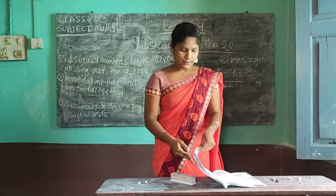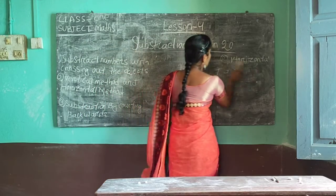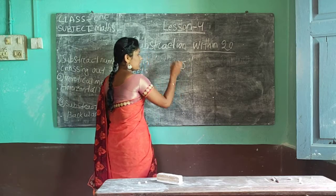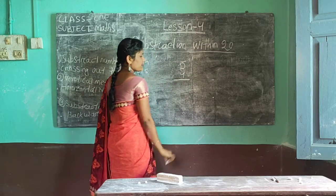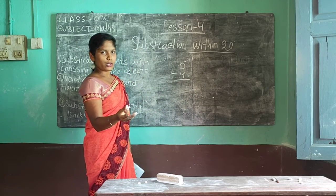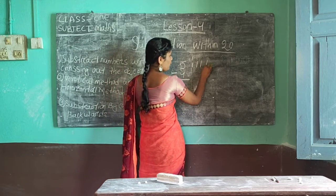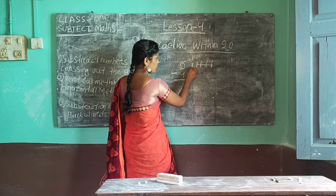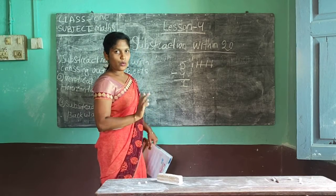So, next topic is word problems. Take another example. You have 5 stars. You gave your sister 4 stars. How many left? So, put minus — 5 minus 4. 1, 2, 3, 4, 5. You gave 4: 1, 2, 3, 4. How many left? 1. So, 1 star is left.